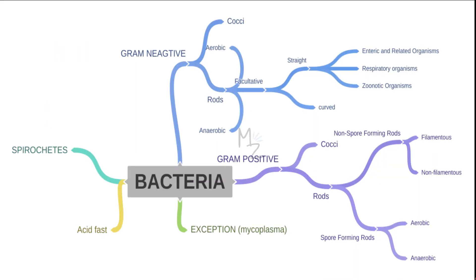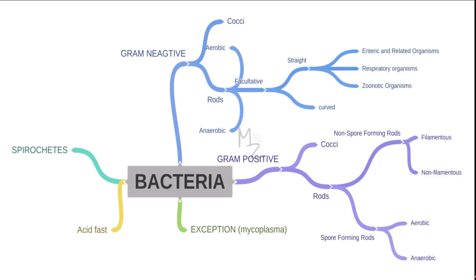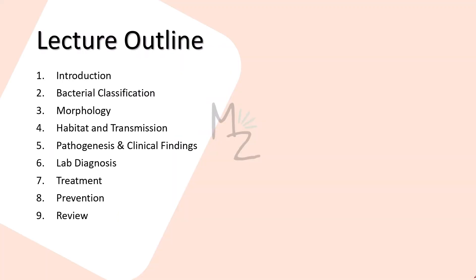Before getting into much detail of Treponema pallidum, we should know about bacterial classification. Bacteria are further subclassified into spirochetes — the topic of today's video — as well as acid fast, gram positive and negative, and mycoplasma, which we've already covered. The lecture outline includes morphology, habitat and transmission, pathogenesis and clinical findings, lab diagnosis, treatment, and prevention. We'll finish with a review.